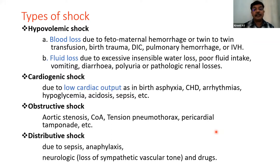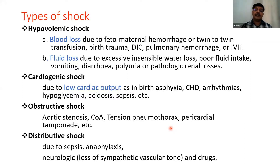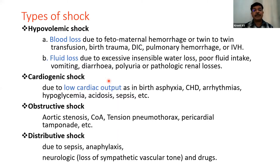Another type is distributive shock, caused by sepsis, anaphylaxis, loss of sympathetic vascular tone, or drugs. In distributive shock, afterload decreases — all blood vessels, arterioles, and venules are dilated, and blood pools in the vascular compartment. It is commonly seen in sepsis and anaphylaxis. In newborns, the presentation is usually a mixed type — a mixture of hypovolemic, cardiogenic, and distributive shock.